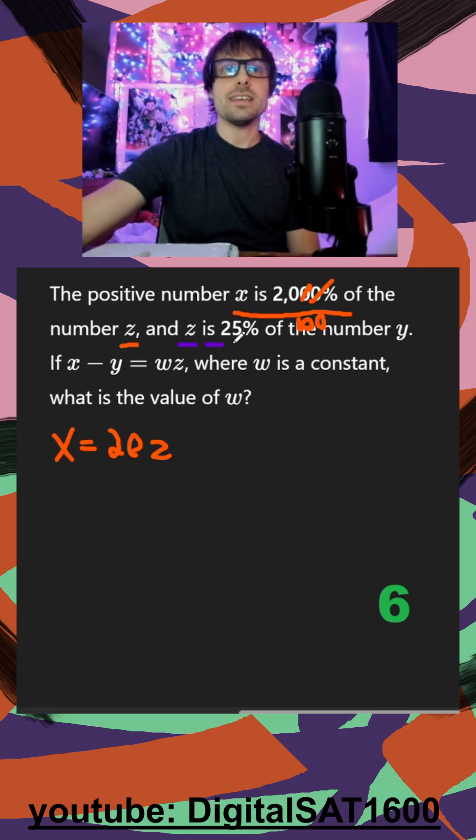I see a second one: z is 25% of y. So I can say z equals, divide by 100, gets me 0.25 of y, so times y.